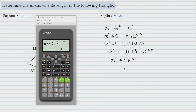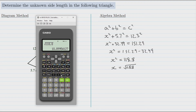Now that's x squared — we want to find x. So once again we'll use the opposite of squaring, which is square rooting. The square root of 118.8 is approximately 10.9 if we round. So x equals approximately 10.9 meters.